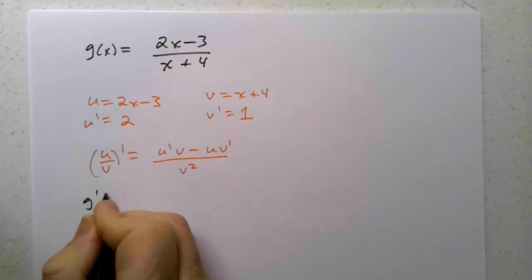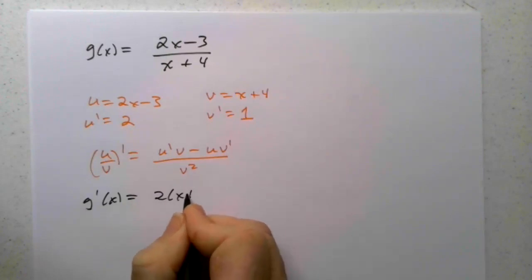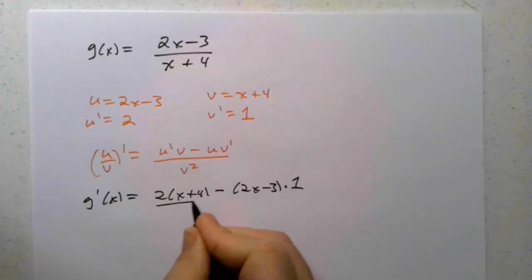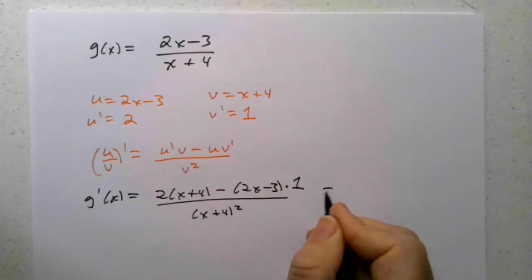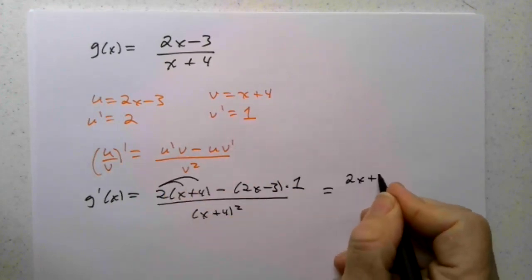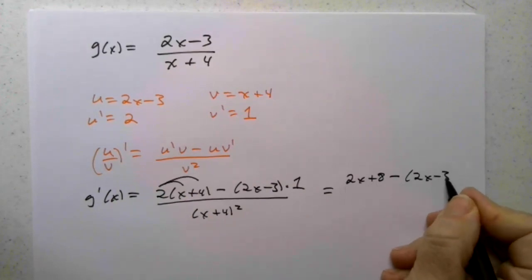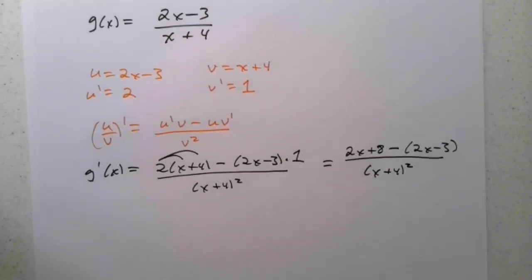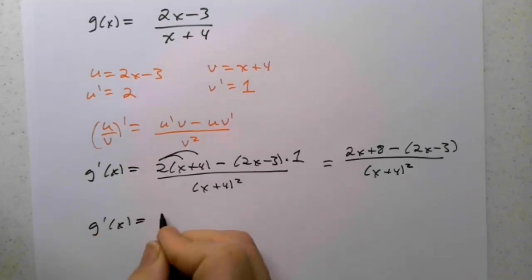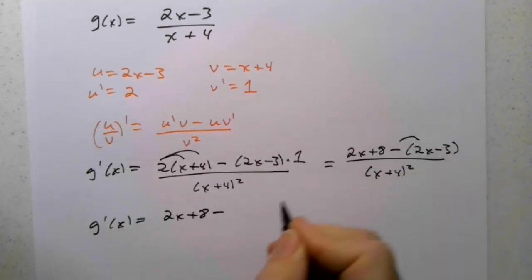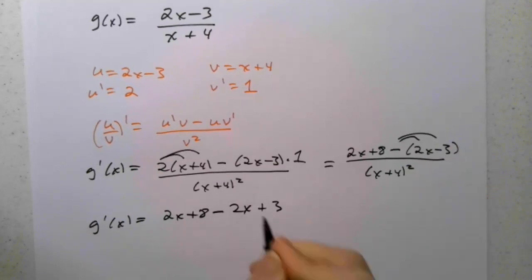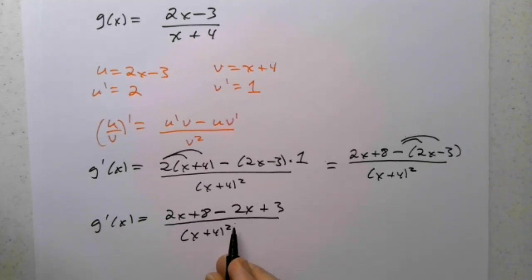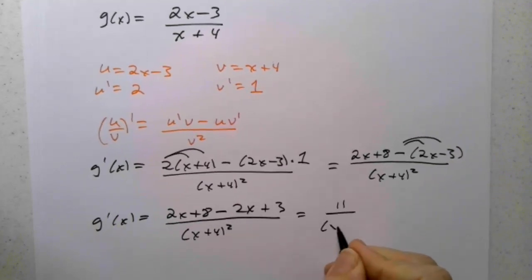So g prime of x equals u prime v: 2 times (x plus 4), minus u v prime: (2x minus 3) times 1, all over v squared: (x plus 4) squared. That gives us 2x plus 8 minus 2x minus 3 over (x plus 4) squared. The 2x terms cancel, and 8 plus 3 is 11, so g prime of x equals 11 over (x plus 4) squared.